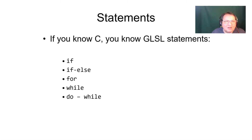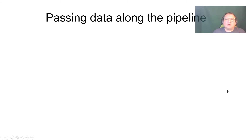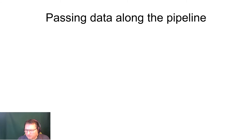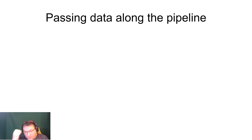Statements: if you know C, you know GLSL statements. If, if-else, for, while, do-while — all are in GLSL in the same form as in C. The next slide is one of the most fundamental slides to understand the structure of shader programs. It's not so much about language syntax at this moment, but something you should really look into, understand well, and use in practice — it's about data flow.